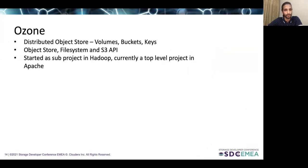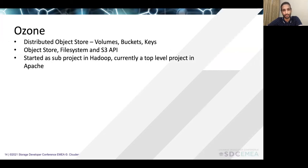Let's look at some introduction about Ozone. It's a distributed object store. The namespace consists of volumes; every volume would have multiple buckets, and every bucket would have multiple keys. Ozone provides accessibility via the object store API, file system API, as well as S3 API. It started off as a sub-project in Hadoop but currently it is a top-level project in Apache.